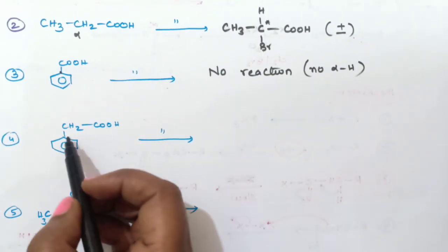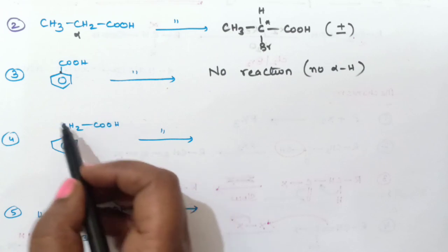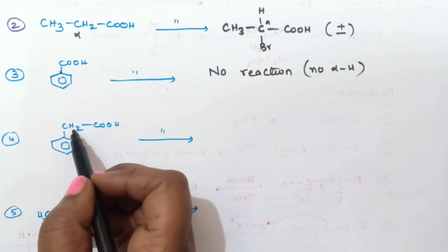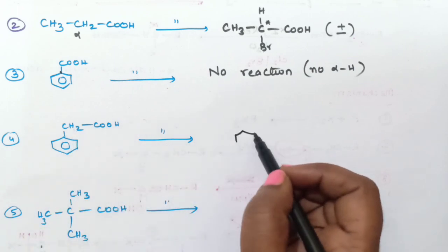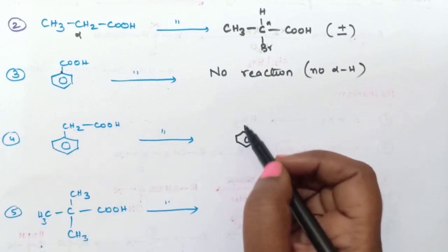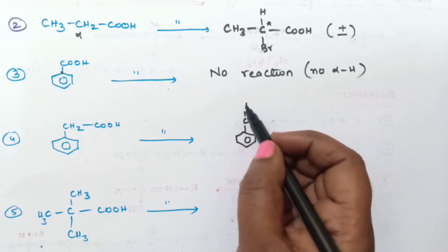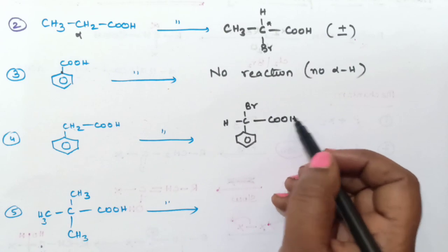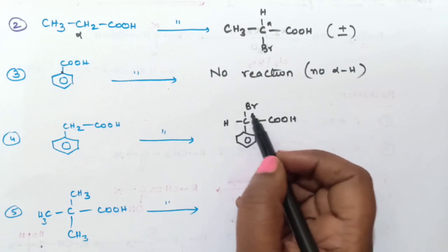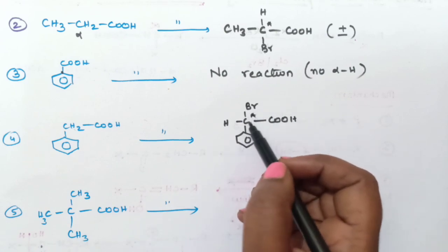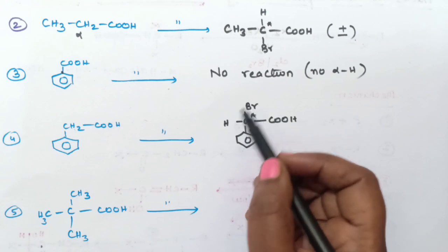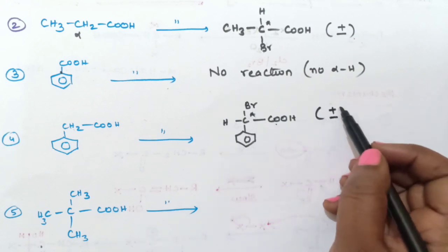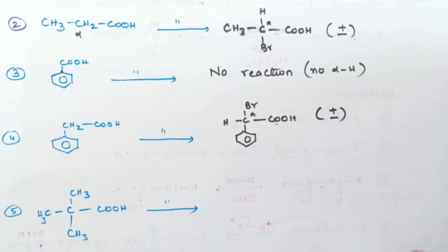For the fourth example, the alpha carbon has two hydrogen atoms. One is replaced by bromine, leaving one hydrogen and one bromine on the alpha carbon, along with the acid group. Again, this alpha carbon is a chiral carbon with four different groups, so the product exists in the plus (+) and minus (−) forms.